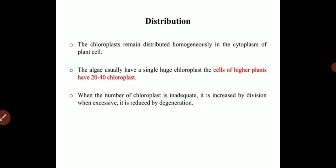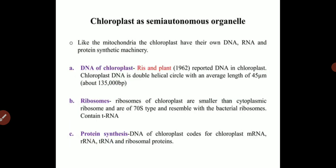When the number of chloroplasts is inadequate, it is increased by division. When excessive, it is reduced by degeneration. Whenever required, the chloroplasts already present in the cell will enter cellular division to produce more chloroplasts. If too many are present, some will be degenerated to reduce the number.